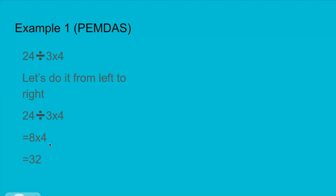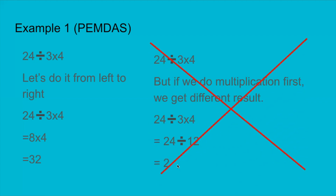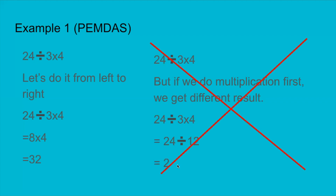I will show you this problem by doing multiplication first so you can see why it is wrong. If you do multiplication first, it becomes 24 ÷ 12, and the answer is 2. See — the answer is different, and this is wrong. So if you have multiplication and division next to each other, go from left to right and do whichever operation comes first.